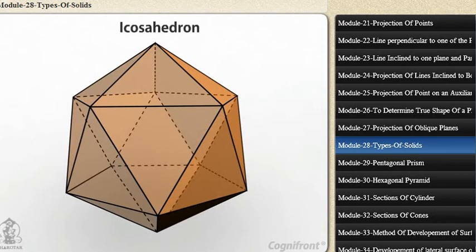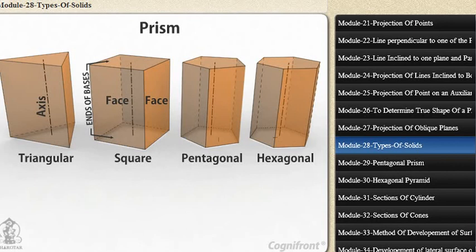Six, prism. This is a polyhedron having two equal and similar faces called its ends or bases, parallel to each other and joined by other faces which are parallelograms. The imaginary line joining the centers of the bases is called the axis.